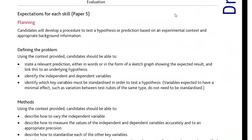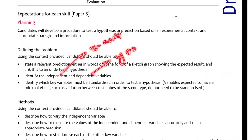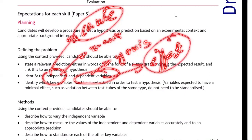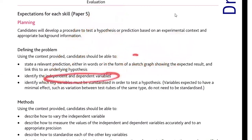For planning questions, you will be asked to lay down a procedure to test a hypothesis or prediction based on an experimental context. The problem will be defined and you may be asked to define it. You may be asked for a relevant prediction — for example, to sketch a graph showing expected results or how the underlying hypothesis relates to what the experimental evidence suggests. You should know how to identify independent and dependent variables. Independent variables are always taken on the x-axis and dependent variables on the y-axis. Independent variables are always the cause bringing the change; dependent variables are always the effect.